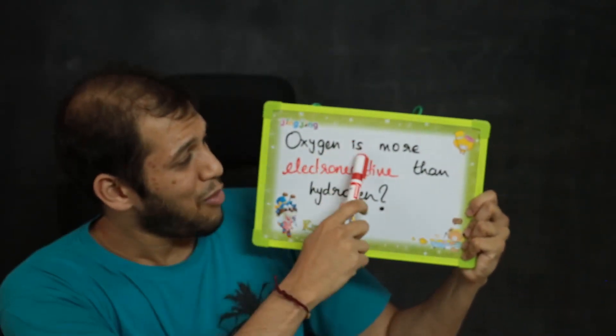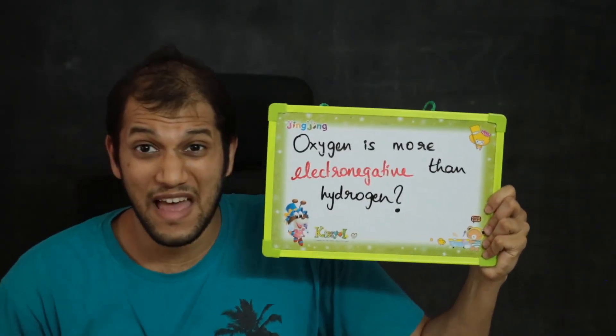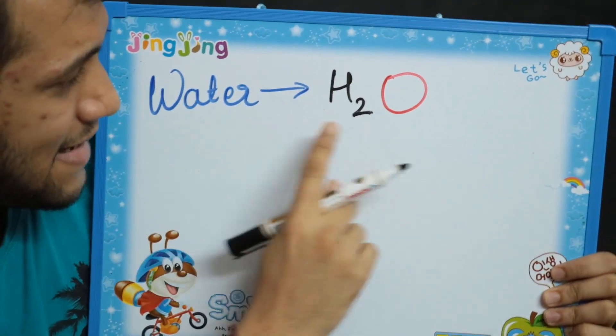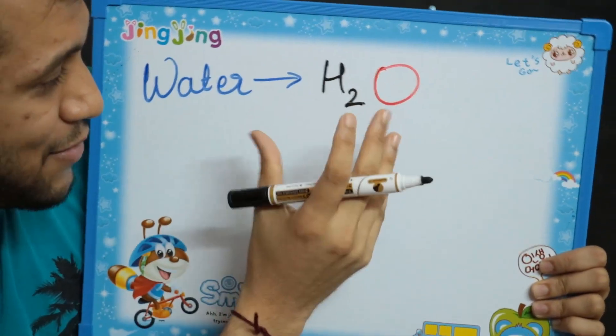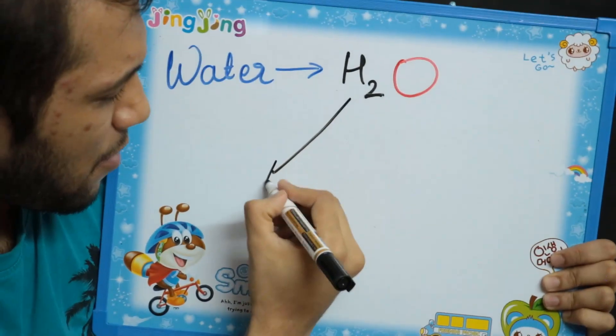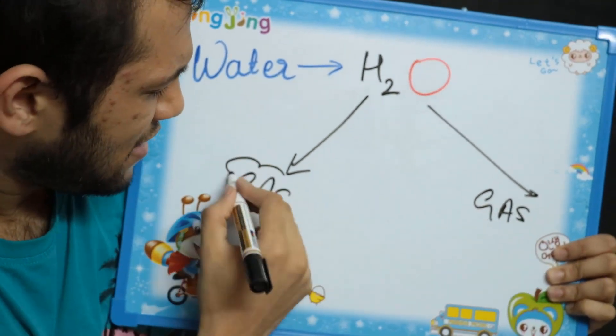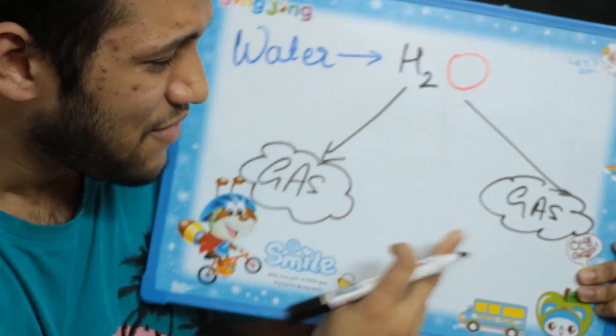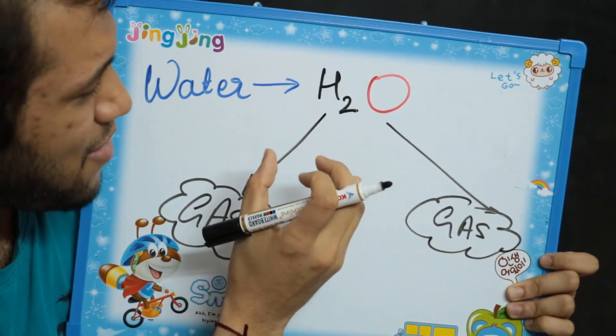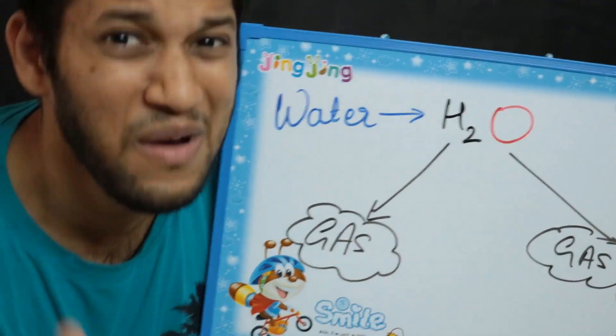Did you know that oxygen is more electronegative than hydrogen? Why are you even telling me this? Because that water you're drinking wouldn't be liquid if it wasn't for this fact. What we call water is actually H2O — it's a mixture of hydrogen and oxygen. But both hydrogen and oxygen are gases at room temperature. So how is it that two gases mix together to give us liquid water and not gas?